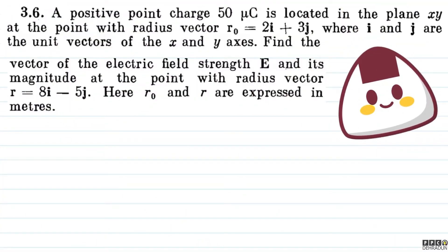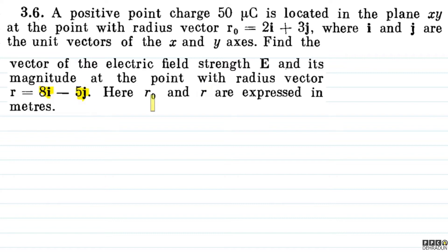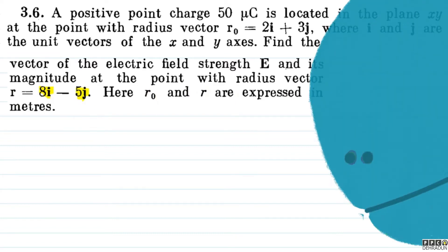Welcome students, let's have a look at this beautiful problem from Irodov. The question says: a positive point charge 50 micro coulomb is located in the plane xy at the point with radius vector r0 equal to 2i cap plus 3j cap, where i cap and j cap are the unit vectors of the x and y axis. Find the vector of the electric field strength E vector and its magnitude at the point with radius vector r equal to 8i cap minus 5j cap. Here r0 and r are expressed in meters.